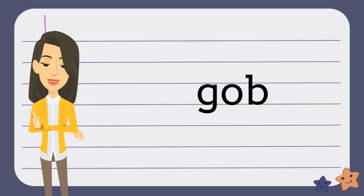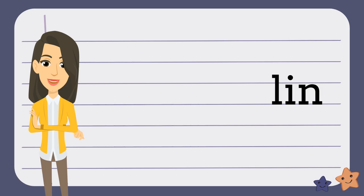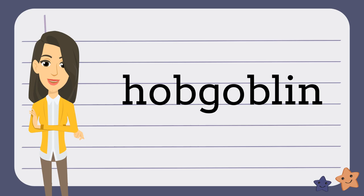The second part is G-O-B. We know that if a syllable ends in a consonant, the vowel is short. So, we'd pronounce this Gob. The final syllable is L-I-N. We know that if a syllable ends with a consonant, the vowel is short. So, we'd pronounce this Lin. We put it together, we get Hobgoblin.